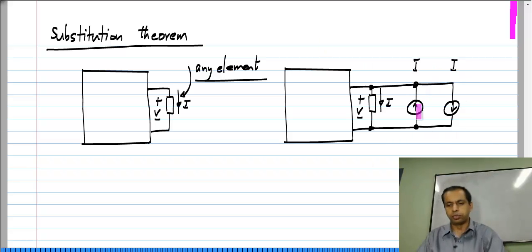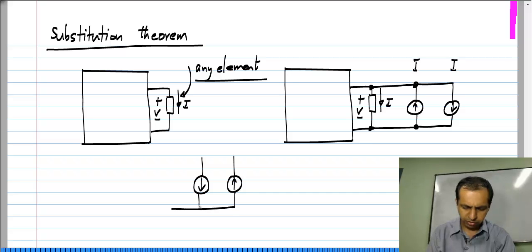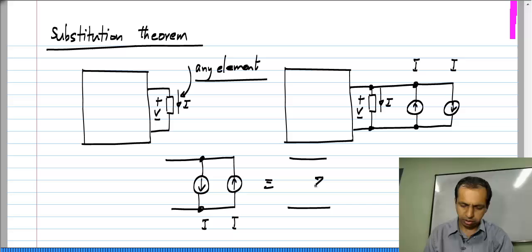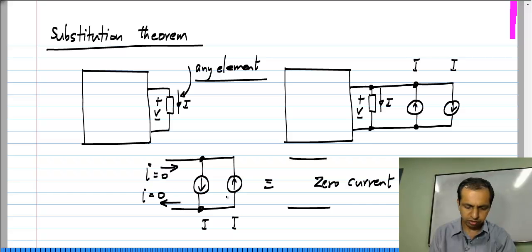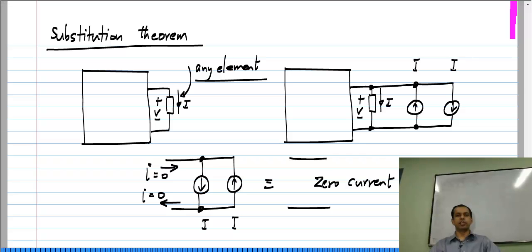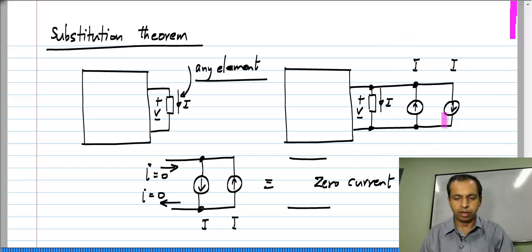If I have two identical current sources connected in anti-parallel fashion like this, it is nothing — it is an open circuit. This is a zero-valued current source. If both are I and I, then this is equivalent to an open circuit, because whatever current comes in here goes that way and goes that way, so the current here is zero. So all I am saying is I will connect an open circuit across the element, and obviously that will not change anything in the circuit.